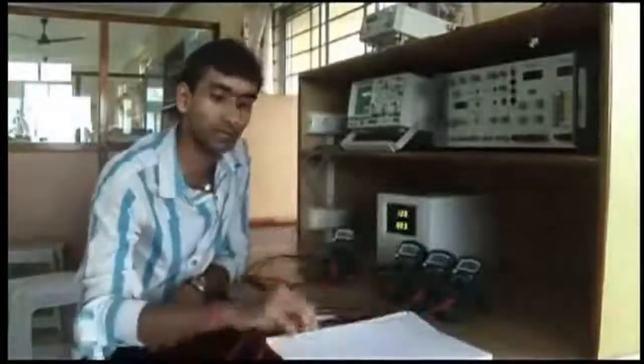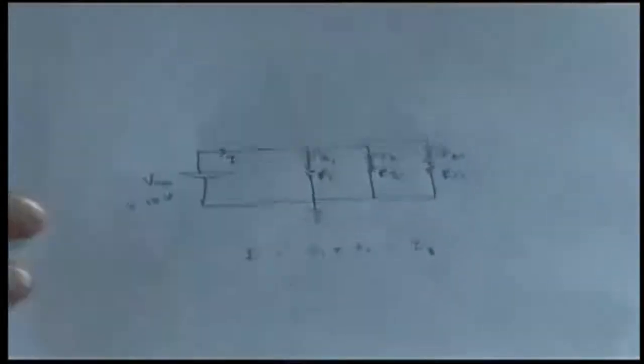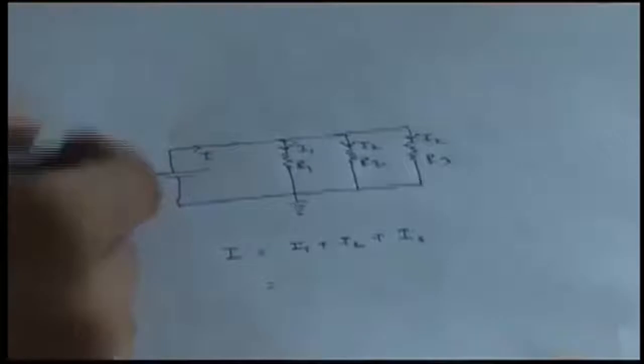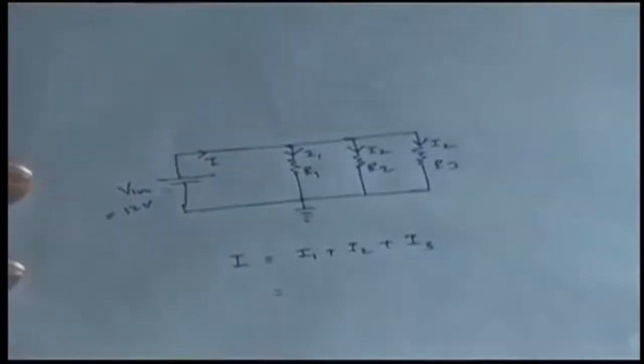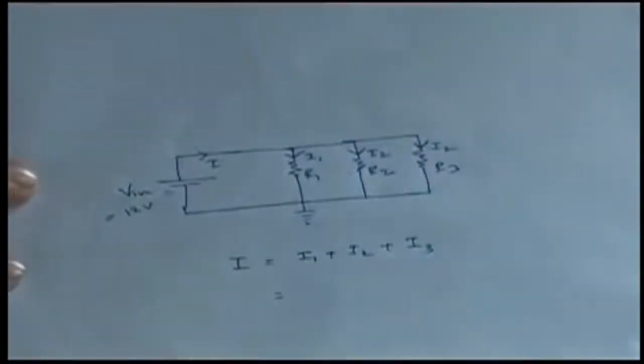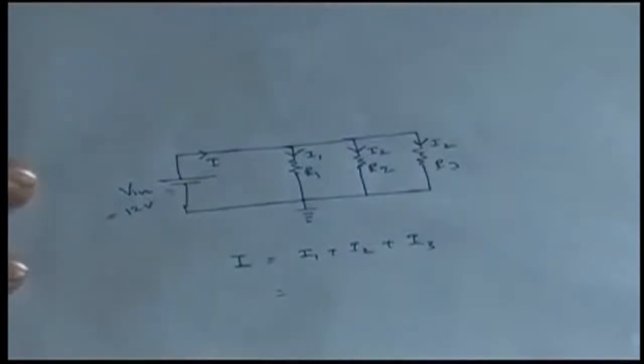This is the voltage source, this is the first branch, second branch, third branch. Now what is KCL here? KCL says that in a node, it is the sum of all the incoming currents and the outgoing currents. Here if we say this entire is one single node, that incoming current is only I and all these currents are outgoing.